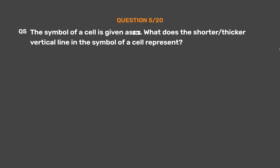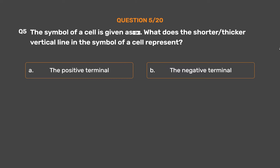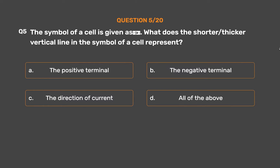Question number 5. The symbol of a cell is given. What does the shorter and thicker vertical line in the symbol of a cell represent? Option A: The positive terminal. Option B: The negative terminal. Option C: The direction of current. Option D: All of the above.